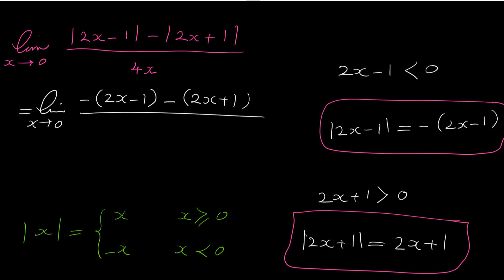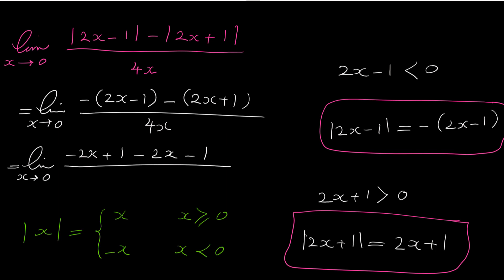Simplifying the numerator by expanding: we get negative 2x plus 1 minus 2x minus 1, all over 4x. In the numerator we have negative 2x and another negative 2x, giving negative 4x, and plus 1 minus 1 is 0. So the numerator is negative 4x and the denominator is 4x. Canceling x from top and bottom gives negative 4 over 4, which is negative 1. The limit exists and equals negative 1.